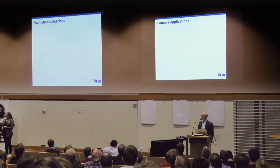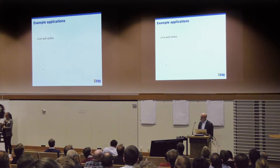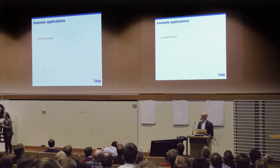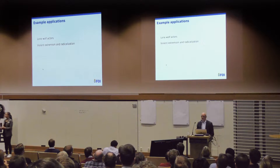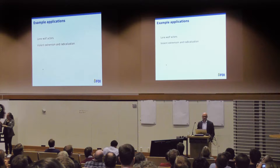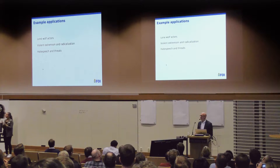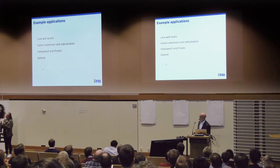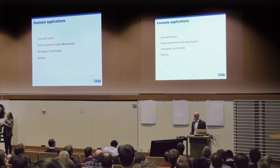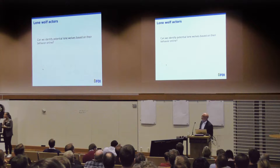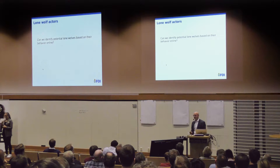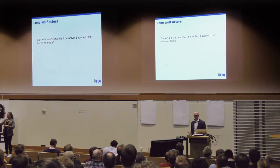Some of the example applications I'm going to mention: lone wolf terrorist actors — trying to detect warning behaviors of these individuals. We do a lot of work on violent extremism and radicalization. Also hate speech and threatening language on internet forums. And if we have time, some examples of analysis we do on darknet data. But I'll begin with lone wolf terrorism. The question is: can we identify potential lone wolf terrorist actors based on their behavior online — for example, their textual behavior on internet forums?